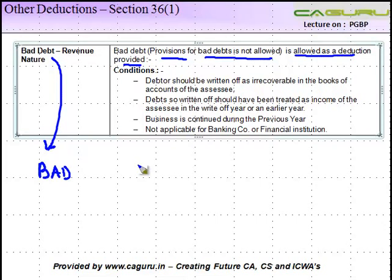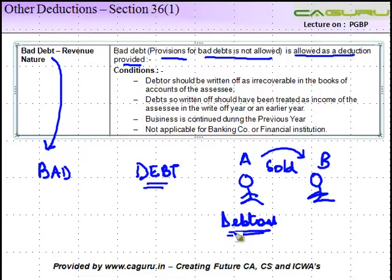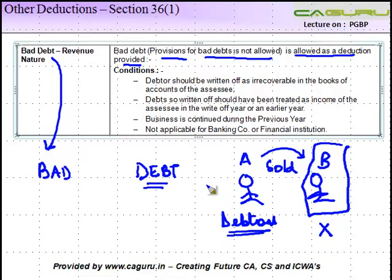As the word itself comprises two words — bad and debt — let's say there are two parties A and B. A sold some goods to B and showed B as a debtor in his books of accounts. But B, being a crooked person, decided not to pay this amount, or maybe he was genuine but the quality of the product did not meet his specification, or he was bankrupt, or for whatever reason he was not willing to pay this amount back to A.